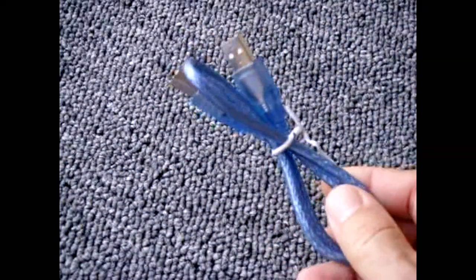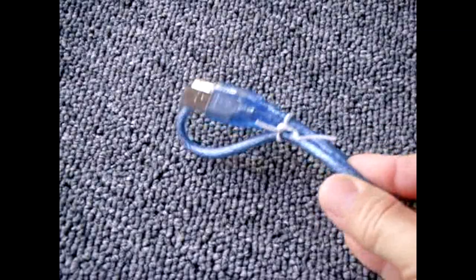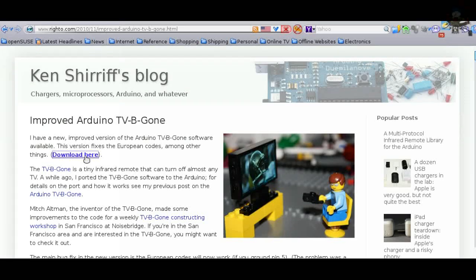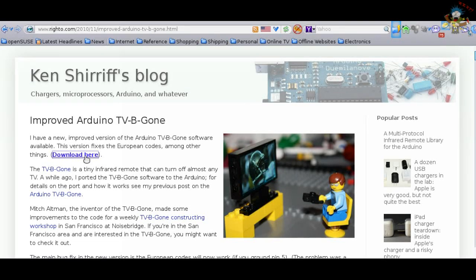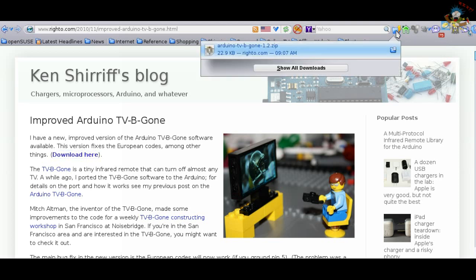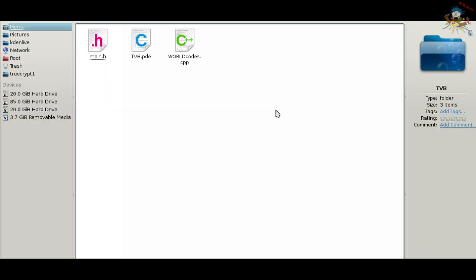The next thing I'm going to do now is take you step by step on my computer showing how you program the Arduino device. All right, so now we're at Ken's blog. Right over here is the link that you're going to click to download the files to program the Arduino using the Arduino software, which I'm going to show you how to set up in a minute. Once it's downloaded, you're going to have a zip file as you can see right here. You're going to extract that file. You're going to see three parts when extracted: main.h, tvb.pde, and worldcodes.cpp.